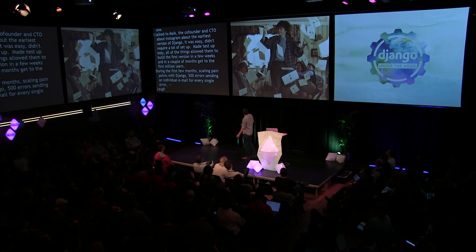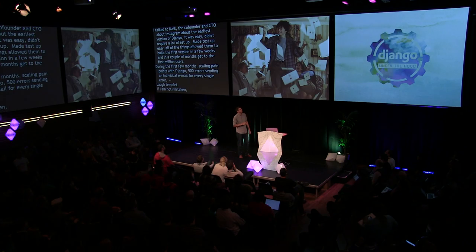During those first few months, they hit some of their first scaling pain points with Django — probably things that many of you have also encountered — like 404s or 500 errors sending an individual email for every single error. Apparently at one point, Mike and Kevin were literally getting an email for every browser request that came in to Instagram.com, because they had a missing favicon, so every request generated a 404, and every 404 generated an email.